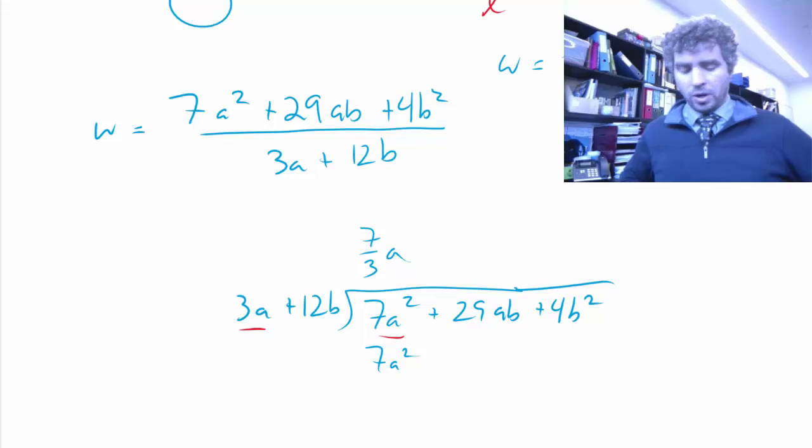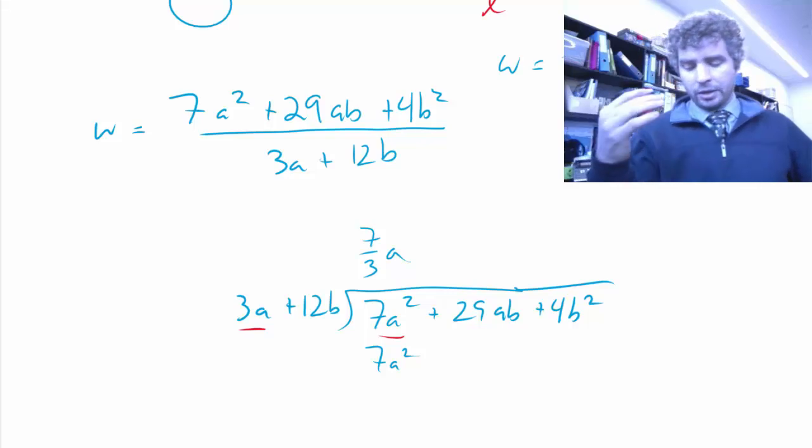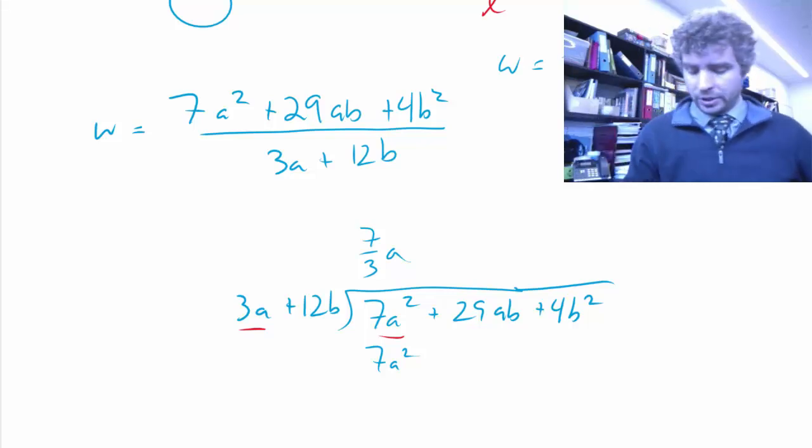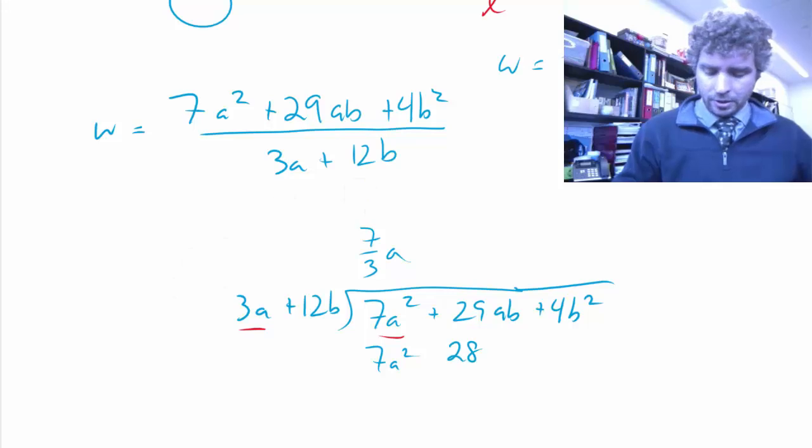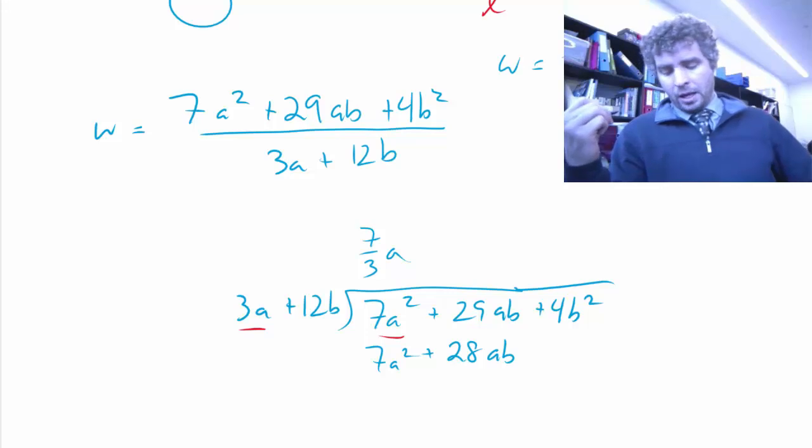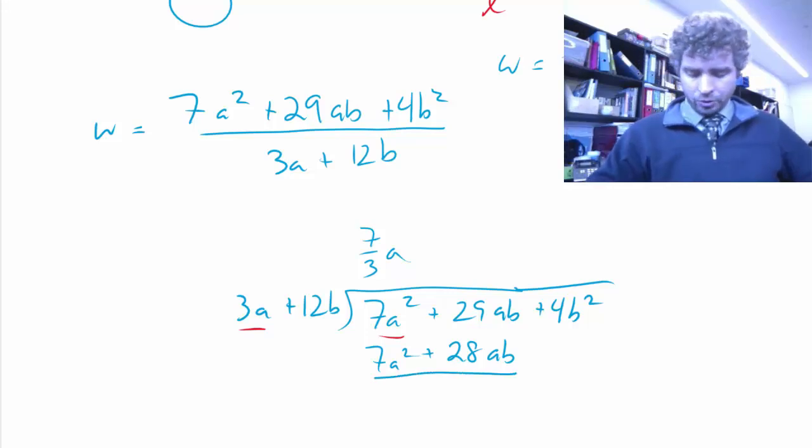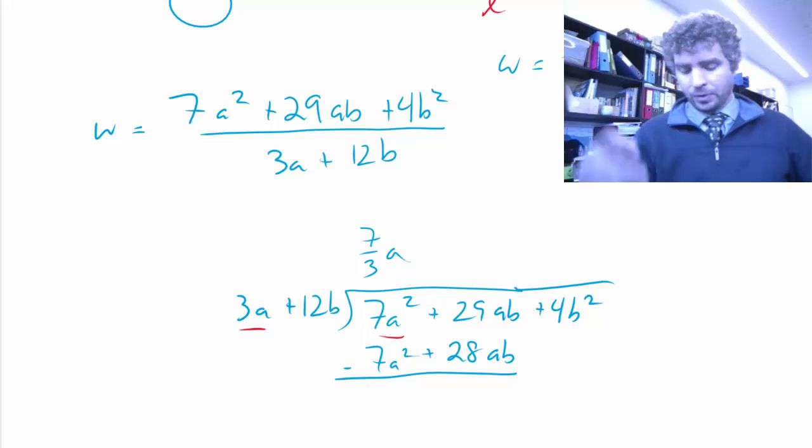And then 7 thirds a times 12b, so 7 thirds times 12, well, 12 divided by 3 is 4, so 7 times 4 is 28, and then a times b is ab. This is a plus. And so we're going to subtract that to find the remainder.